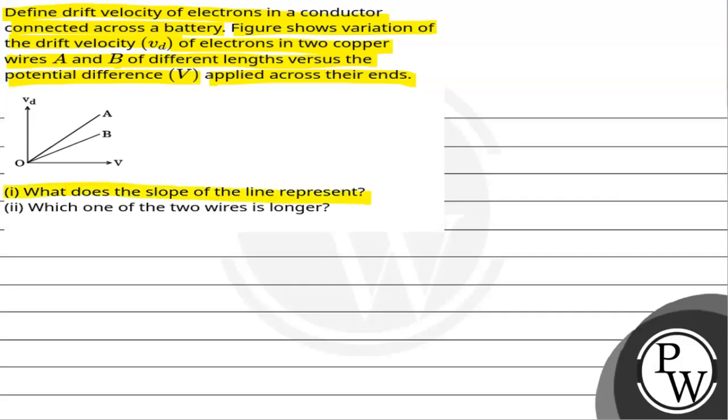First, what does the slope of the line represent? Second, which one of the two wires is longer?